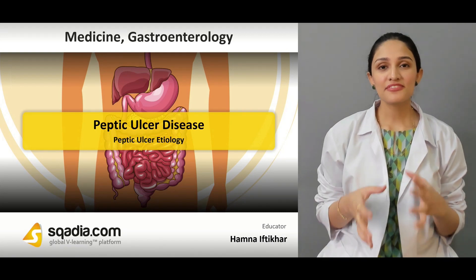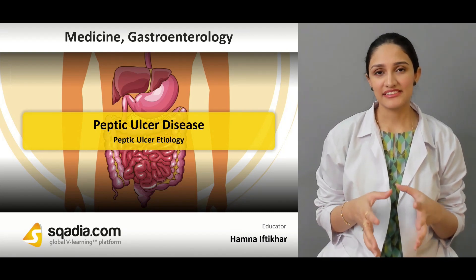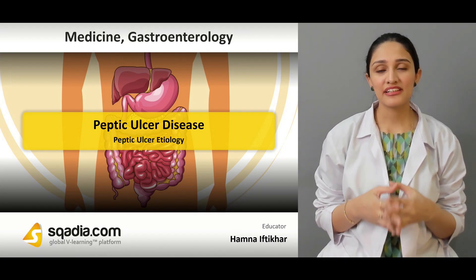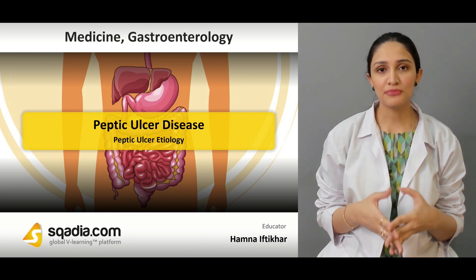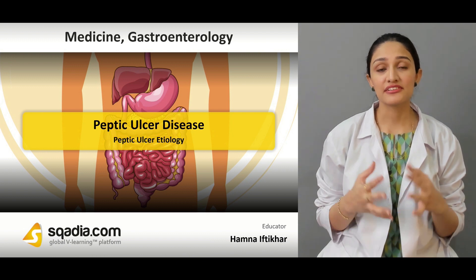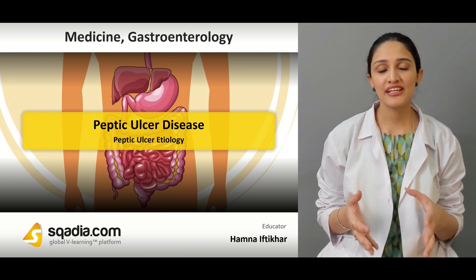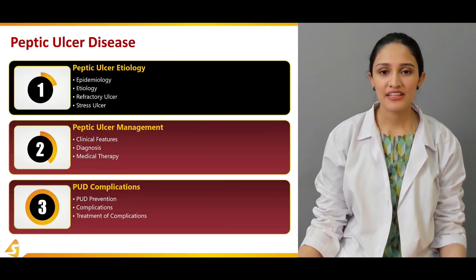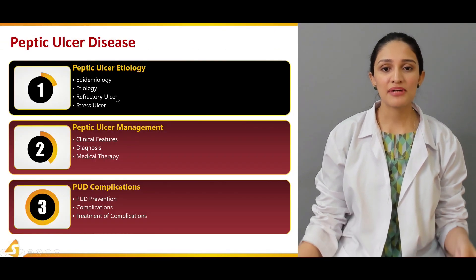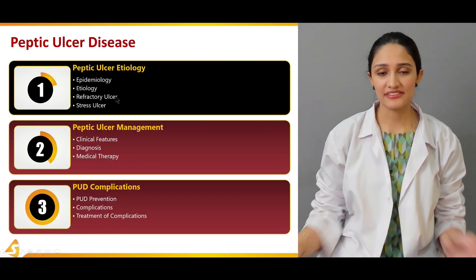In this first section regarding peptic ulcer disease, we'll be studying about different things such as the epidemiology, the causating factors, the etiology, and different types of ulcers. We'll also be studying about refractory ulcers and stress ulcers.